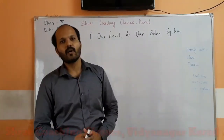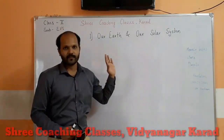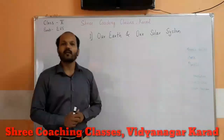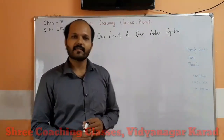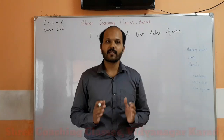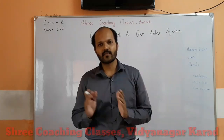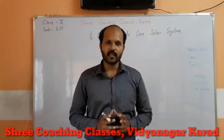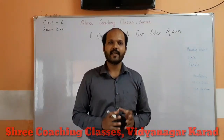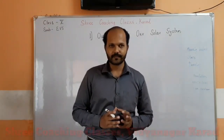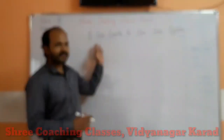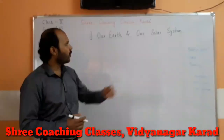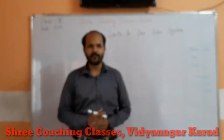Now we all know about our Earth. Where are we living? We are living on Earth. Earth is a planet that consists of land as well as water. Most of the part of Earth is containing water on it. So let's start to see what is Earth and what is the solar system.